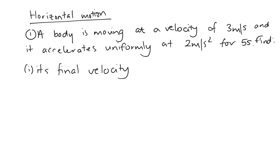Sample one then, we're going to look first of all at horizontal motion, and we'll get on later in the course to look at vertical motion. A body is moving at a velocity of 3 meters per second, and it accelerates uniformly at 2 meters per second squared for 5 seconds. Find its final velocity.